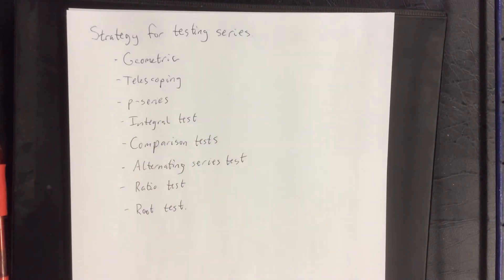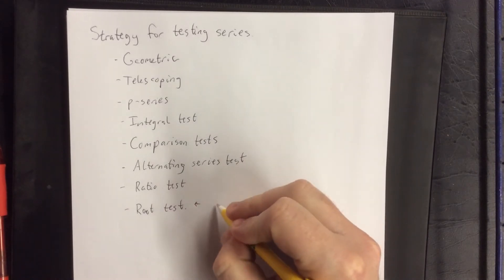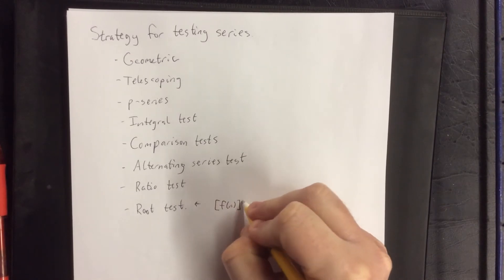So I'd like to talk about the kinds of things to look for in terms of what test we would want to use. I'm going to start with the root test. The root test is relatively straightforward. Anytime you see something that is a function of n and it's raised to an nth power, go with the root test.